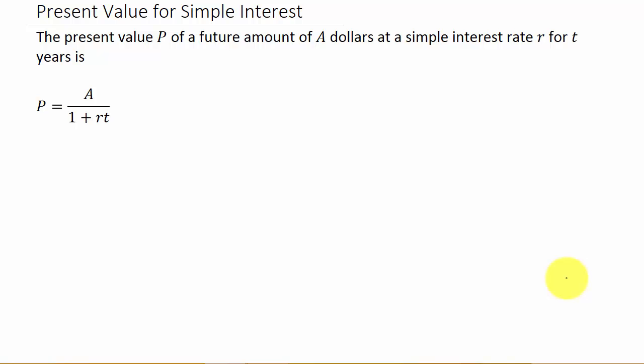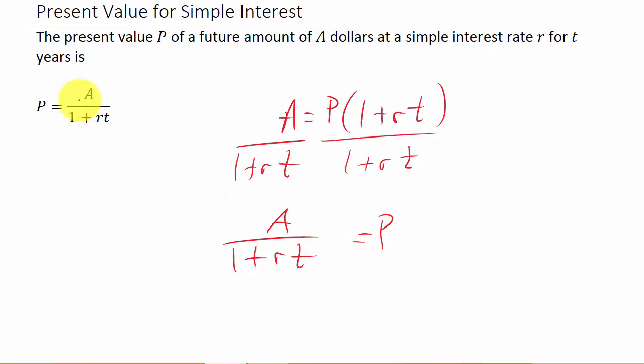Now, if you watched my other video, or if you remember, A equals P times 1 plus RT, that was the future value or maturity value. Well, look at this. If you divide it by 1 plus RT, you get P is equal to A over 1 plus RT. And you can see there's your present value. That's all you're doing is solving for that amount.